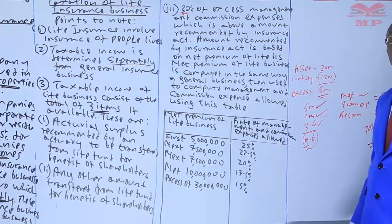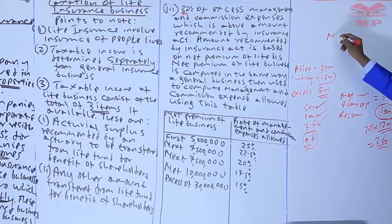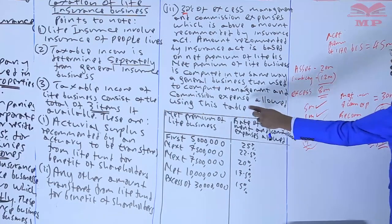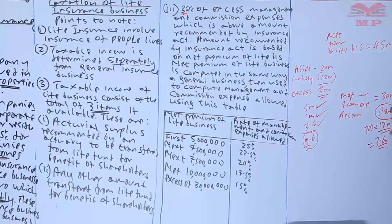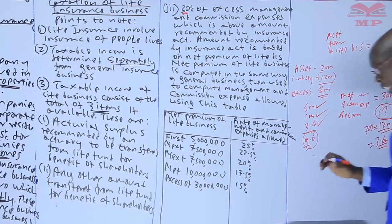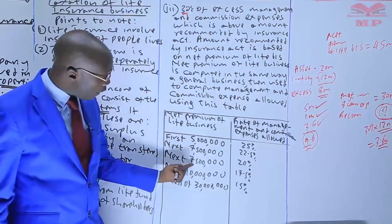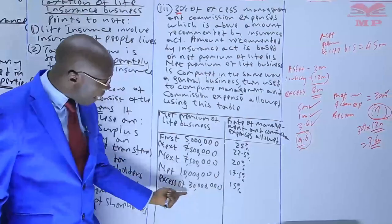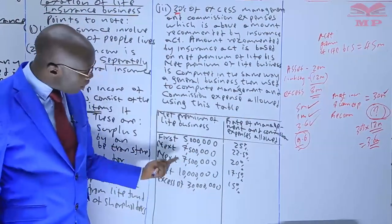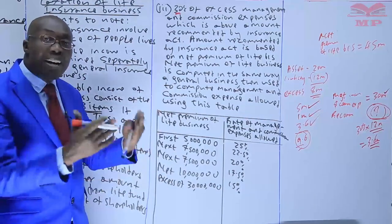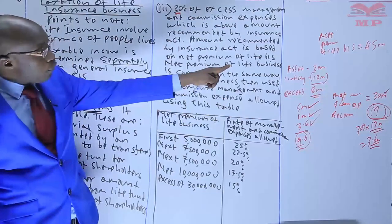The net premium of life business is computed in the same way as general insurance business. For example, say the net premium of life business is 45 million. You use the tiered table: the first 5 million at 25 percent, the next 7.5 million at 22.5 percent, the next 7.5 million at 20 percent, the next 10 million at 17.5 percent, and anything above 30 million at 15 percent.